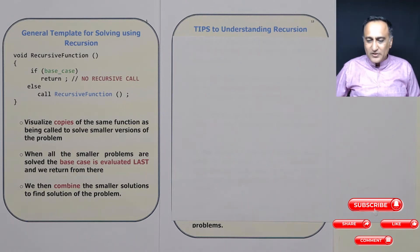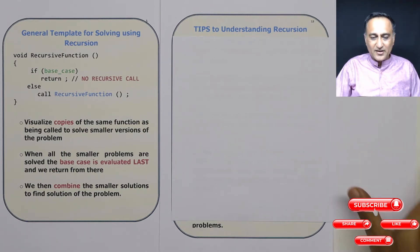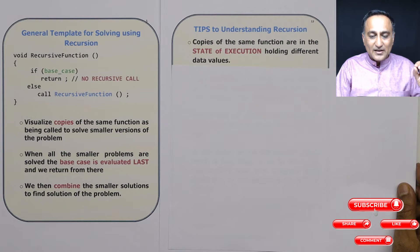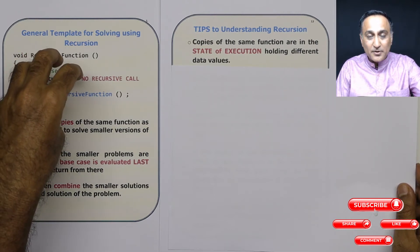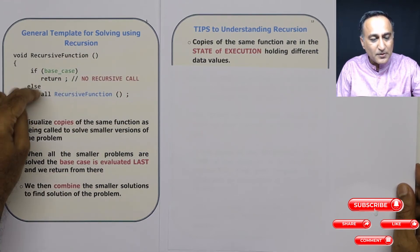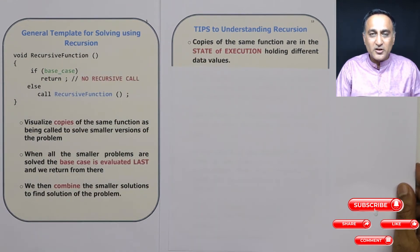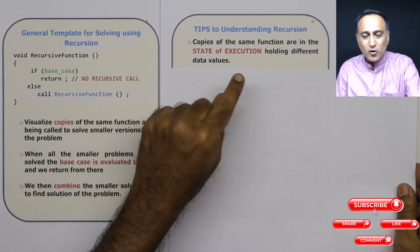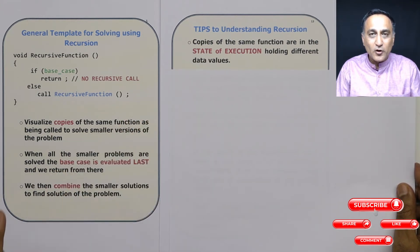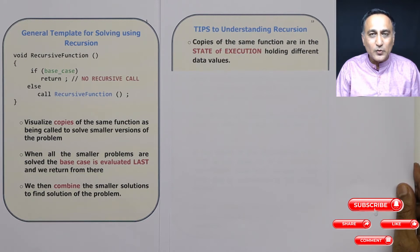The first tip is always think of multiple copies of the recursive function as being in execution. Don't try to think of the same function and go through it multiple times. Think of multiple copies in execution using the stack frame or the activation record concept. Since multiple copies of the same function are executing, they are going to have different values of local variables within them, because each activation record has a different state of execution and will contain different variable values.